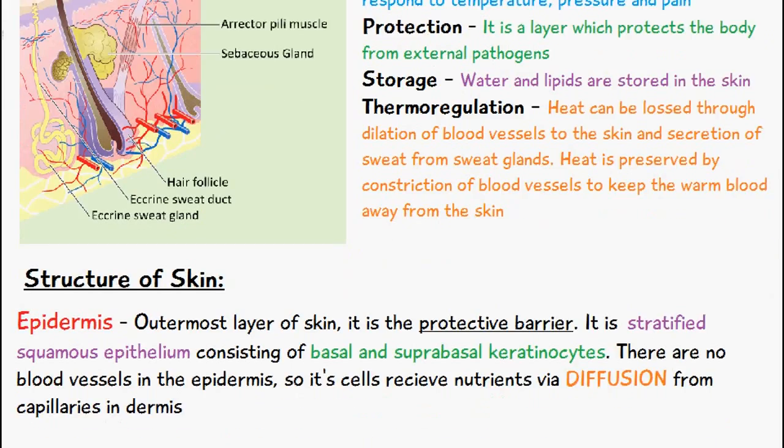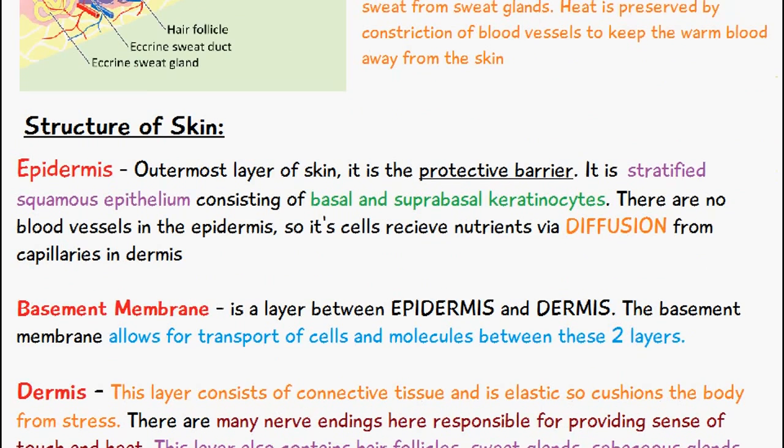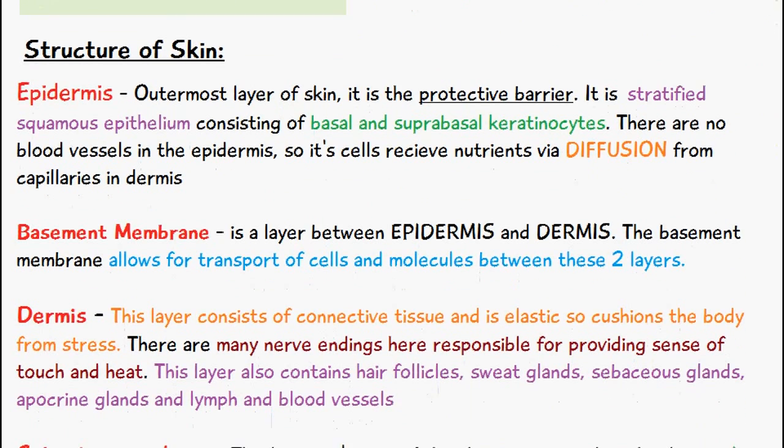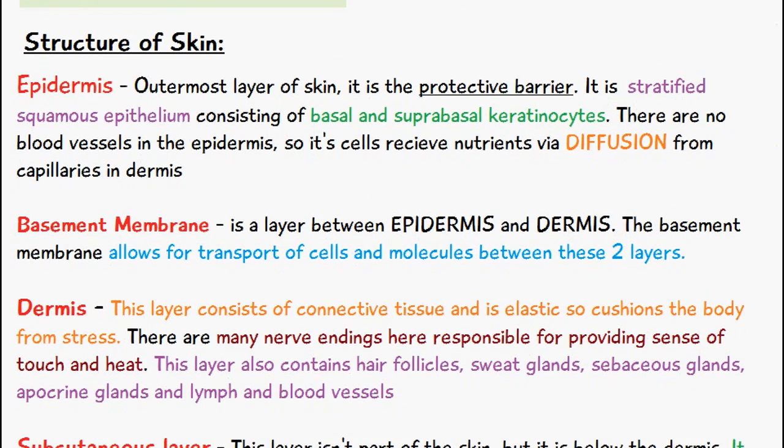The structure of skin has several layers. The outermost layer is called the epidermis and this is the protective barrier because it's the one that's in contact with the outside environment. It consists of stratified squamous epithelium, and inside that are basal and suprabasal keratinocytes. There are no blood vessels in the epidermis.